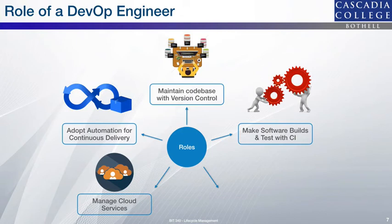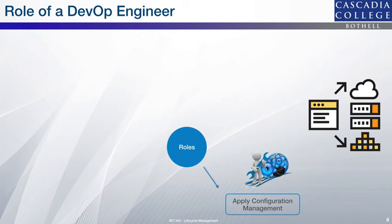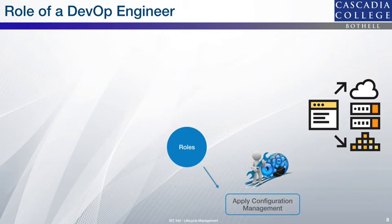Next, let us discuss configuration management, which is the management of software and hardware — the entire infrastructure. It defines how each of the existing servers and node machines should work. At this stage, a baseline is created according to the existing architecture and tasks to be performed. Configuration management documents everything so that, if needed, one can roll back to a previous version of the existing infrastructure.